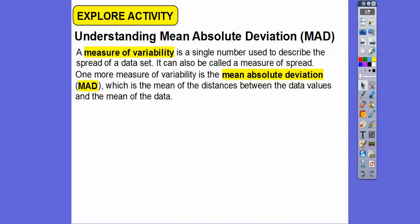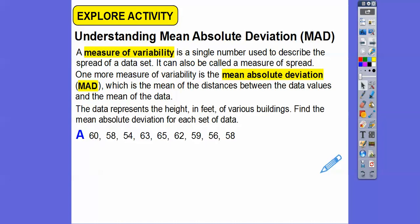It can also be called the measure of the spread. So what we're going to do is do the Mean Absolute Deviation, which is the mean of the distances between the data values and the mean of the data. And you're thinking, what? There's a lot of words of mean in there. Well, we're going to be calculating averages a lot.